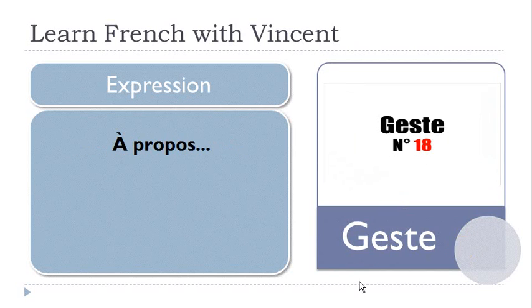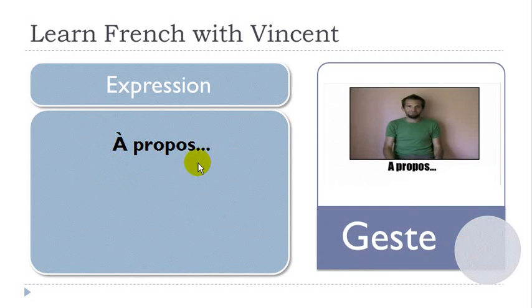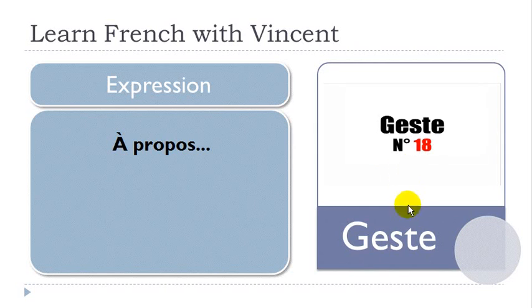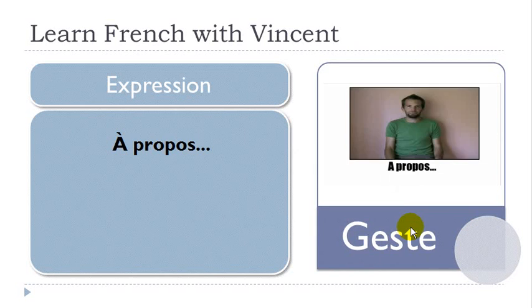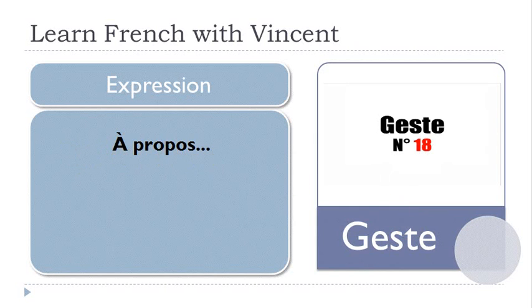The next gesture is APROPOS, which translates directly as 'by the way.' Look — everything is in the arm. APROPOS — translation: by the way.